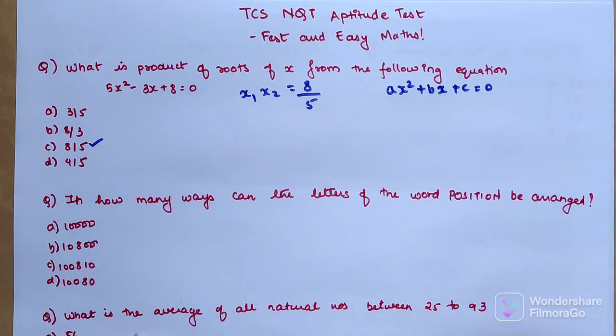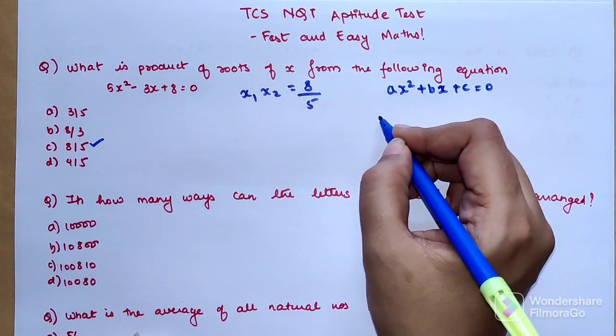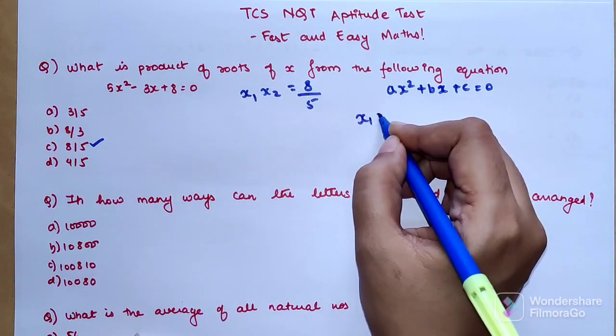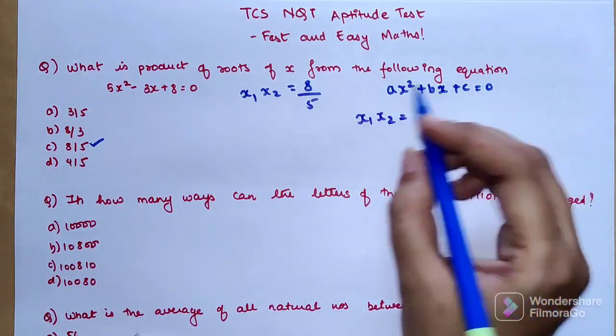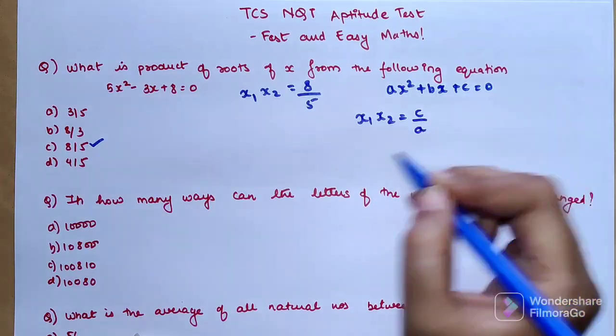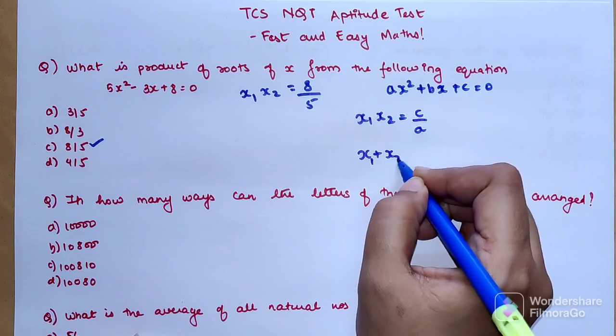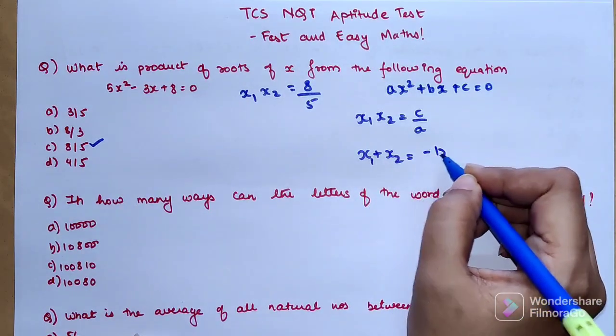For ax² + bx + c = 0, this is the standard form of a quadratic equation. If x₁ and x₂ are the two roots, the product will be c/a, and the sum of the roots x₁ + x₂ would be -b/a.